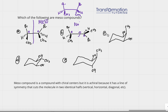Let's go to C. Molecules C, D, and E are all chair forms. An easy way to determine whether these are meso is to redraw them as a flat cyclohexane. I'll draw cyclohexane and number the carbons one, two, three. Then I'll identify whether the substituents on the chair are pointing up or down.